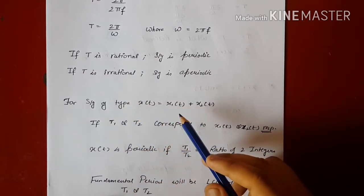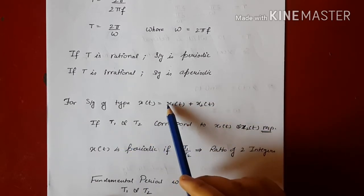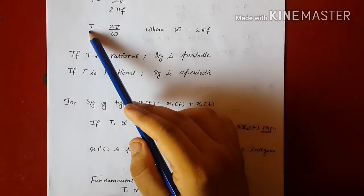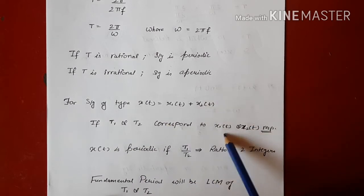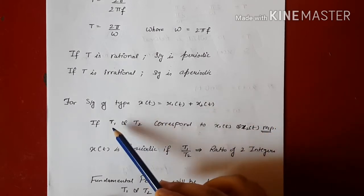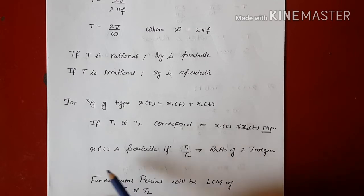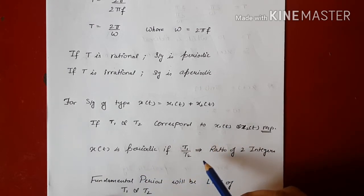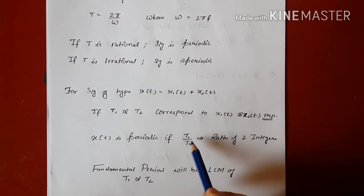For signals of the type x(t) = x₁(t) + x₂(t), treating these two signals as separate entities, we find capital T = 2π / ω separately, denoting them as T₁ and T₂ for x₁(t) and x₂(t) respectively. Taking the ratio T₁ / T₂, if this ratio is a ratio of two integers then the main signal is periodic; otherwise it is aperiodic. The fundamental period in the periodic case is the LCM of T₁ and T₂.